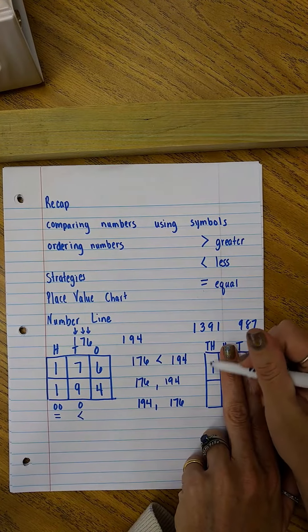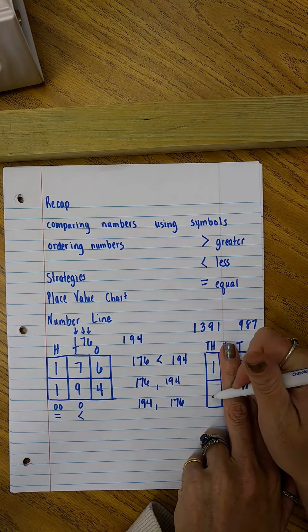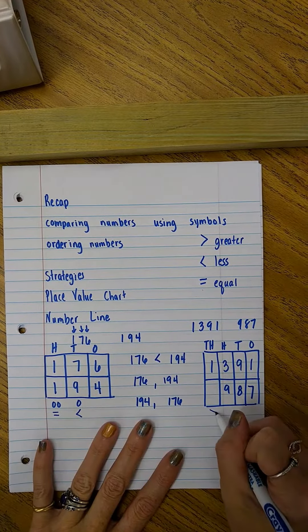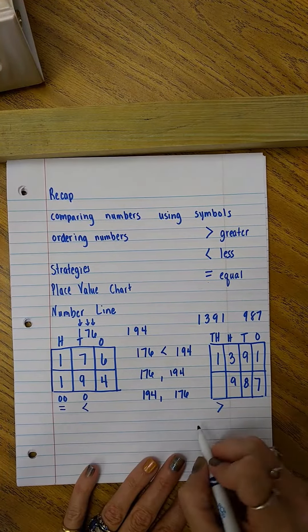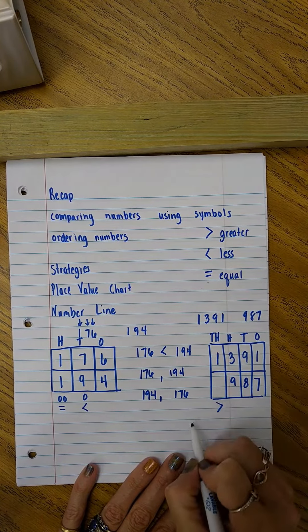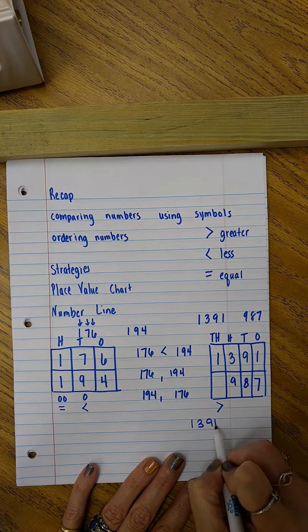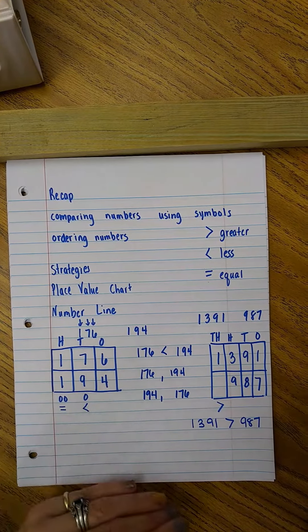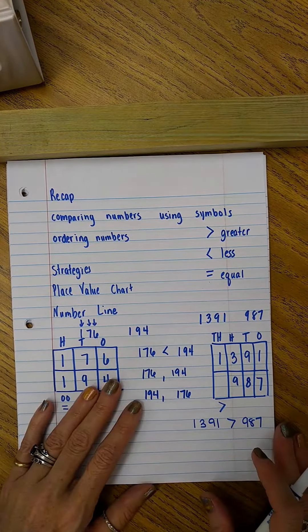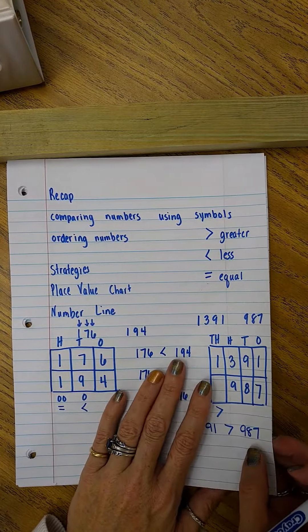I compare my thousands. Right here I have a one and I have nothing. The one is greater than. So I can stop there. I don't even need to look at the rest of the numbers. So I write it the same way. 1391 is greater than 987. And then I would just put them in order from greatest to least or least to greatest depending upon the question. That's the first strategy that they were taught.